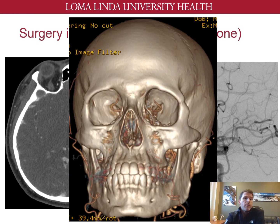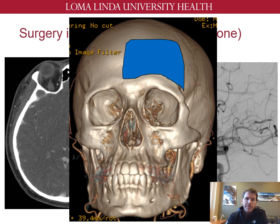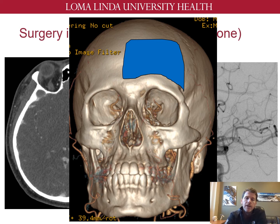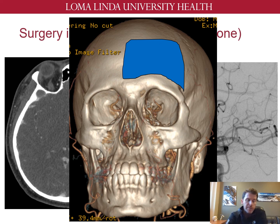One way to approach these fistulas is through a unilateral low anterior frontal craniotomy. The fistula site lays along the cribriform plate, which can be accessed subfrontally with good brain relaxation. One key consideration with this approach is what to do with the frontal sinus, which may have to be opened given the low anterior access needed. Once the fistula is identified, it simply needs to be coagulated and divided. Intraoperative ICG with the microscope can be helpful to confirm complete obliteration of the fistula.